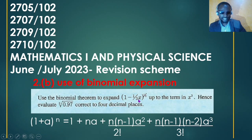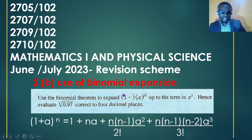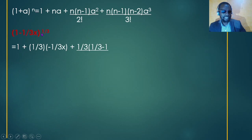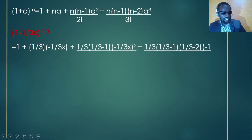For our case, a will be negative x/3, and n will be 1/3. Remember this expression will always hold if the first term is 1. If the first term is not 1, we must make it 1 before applying the formula. So this is the formula we are going to use. Our equation is (1 − x/3) raised to the power of 1/3.